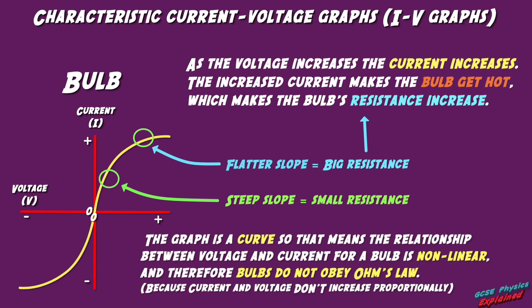The graph is a curve, so that means the relationship between voltage and current for a bulb is non-linear. And therefore, bulbs do not obey Ohm's law.